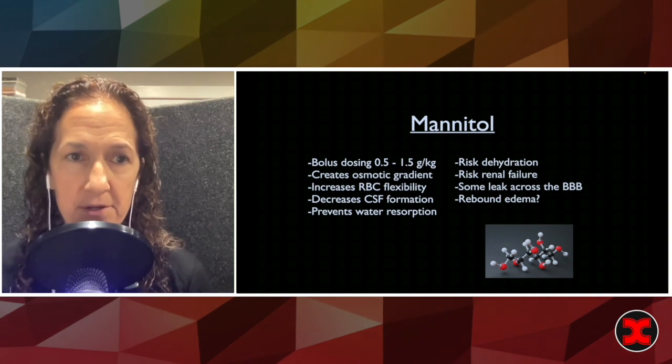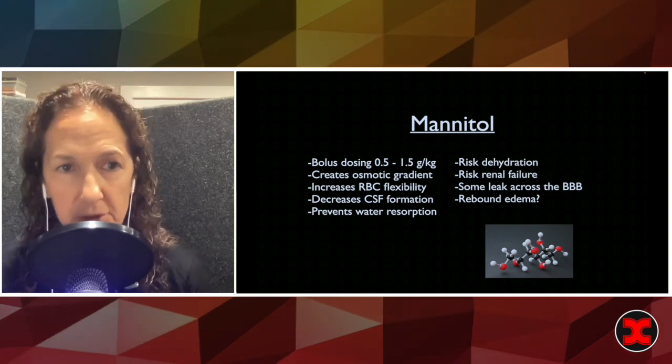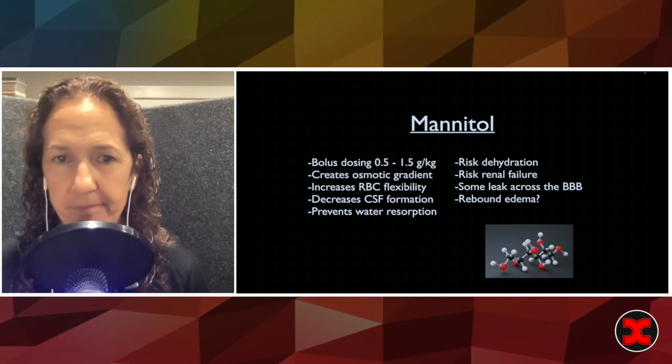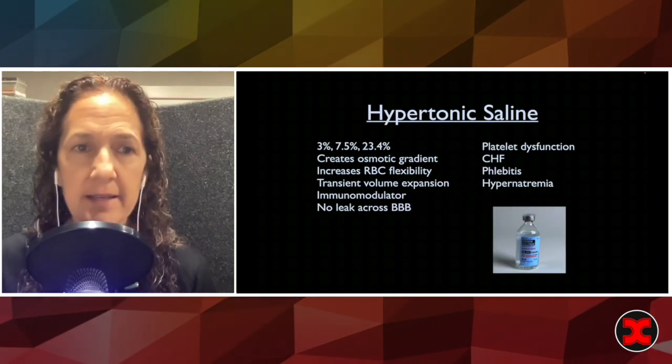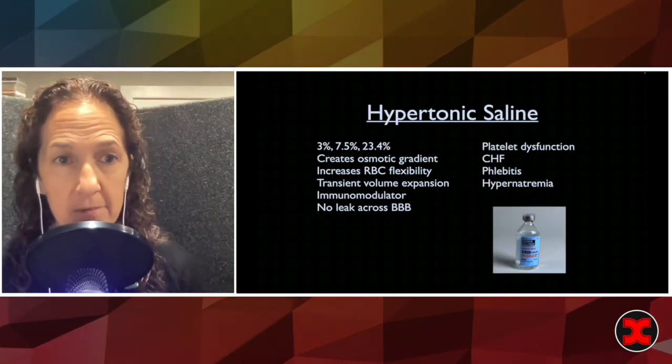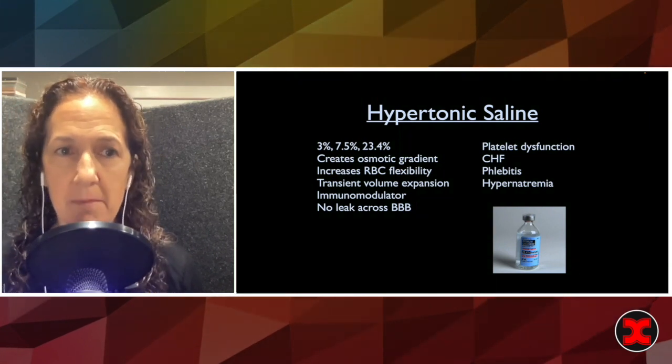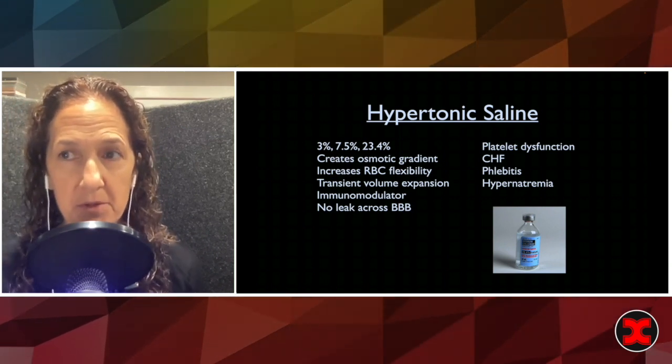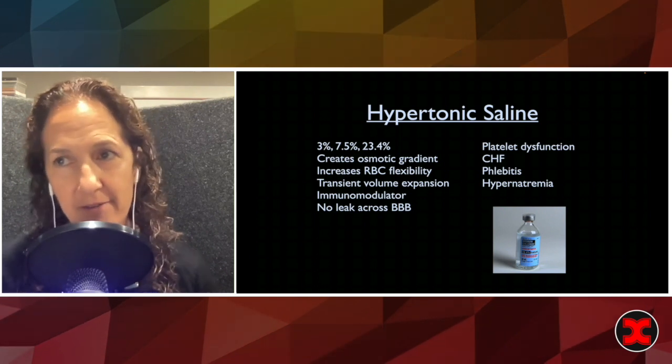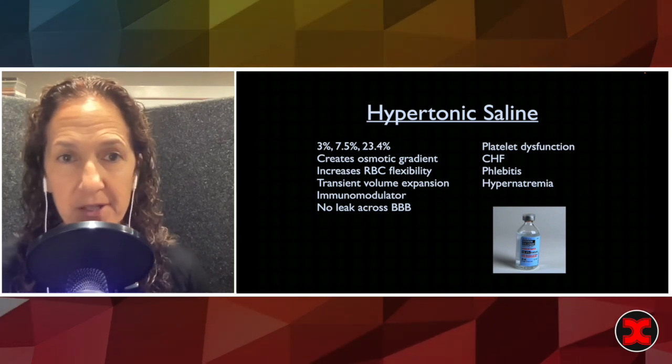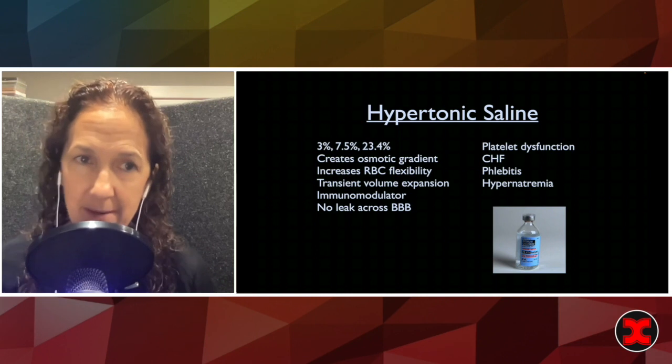The other agent is hypertonic saline. It's the sodium cousin of mannitol. It's really a nice agent that many of us are going to. It comes in multiple flavors - three percent, seven and a half, twenty-three percent bullets. And it does the same thing - it creates this osmotic gradient.